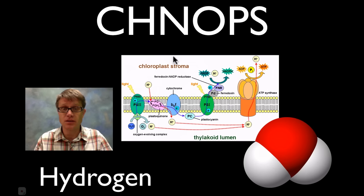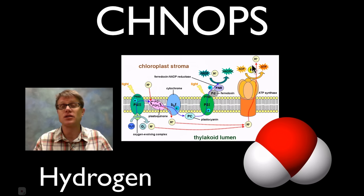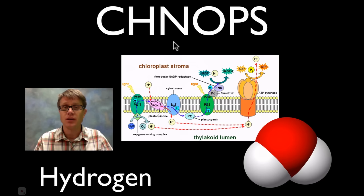And so if we look here, this is the light dependent reaction in photosynthesis. You can see these protons as they flow through ATP synthase are actually making energy in the form of ATP. And so hydrogen is important just through water but also energy transfer.